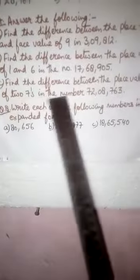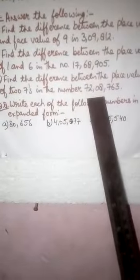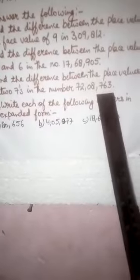Question number 7. Find the difference between the place values of two sevens in the number 72,08,763. Here also you have to find the place value of both the sevens and then you will find the difference between them.